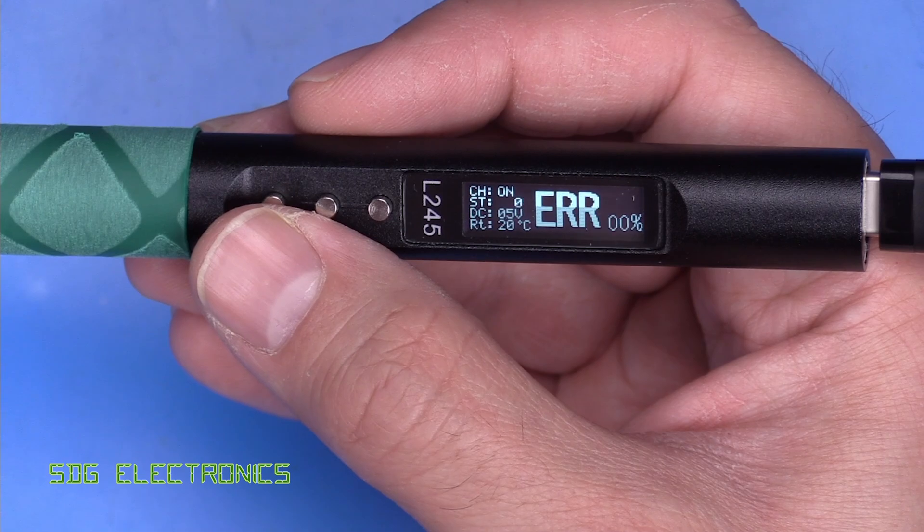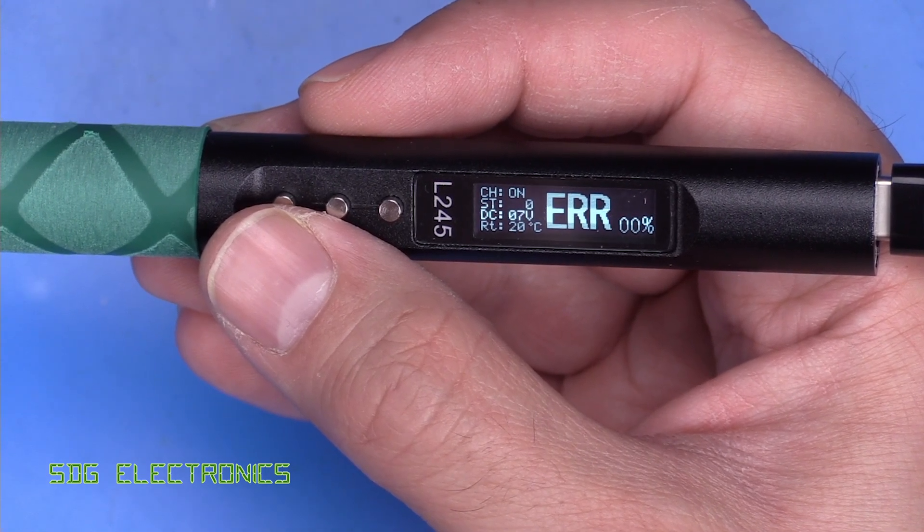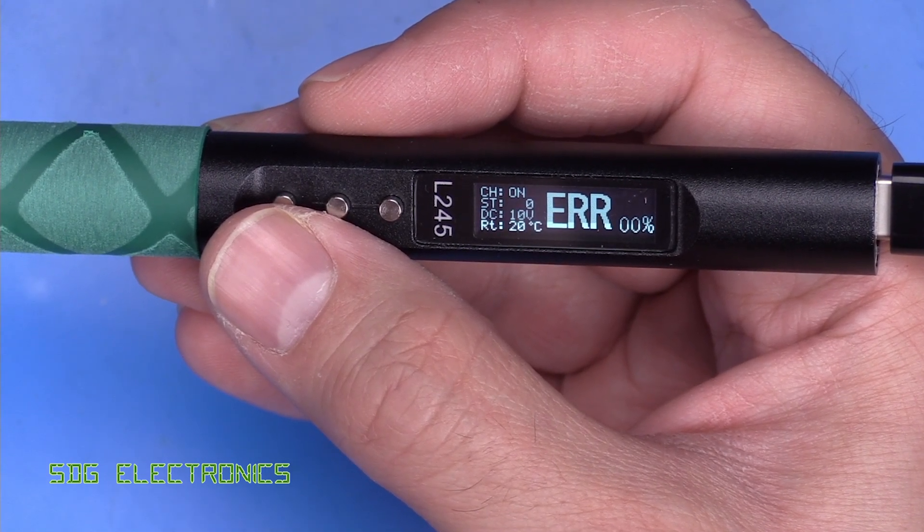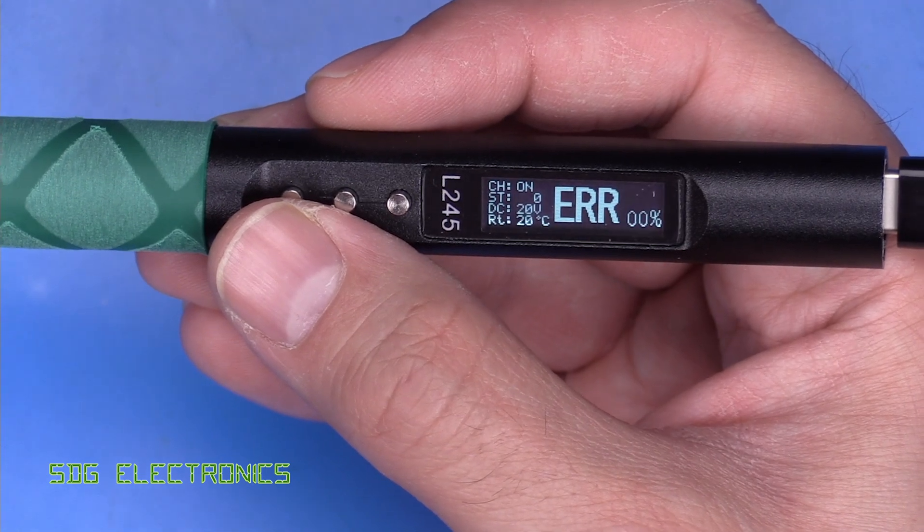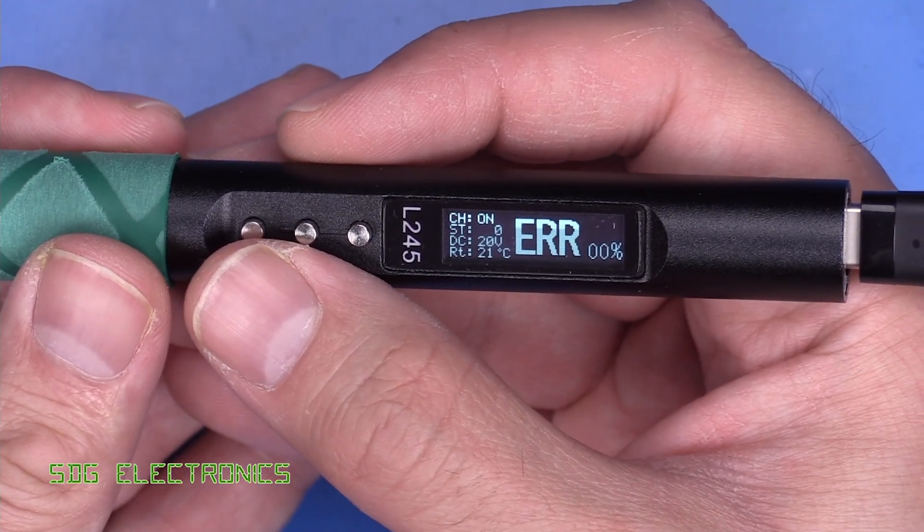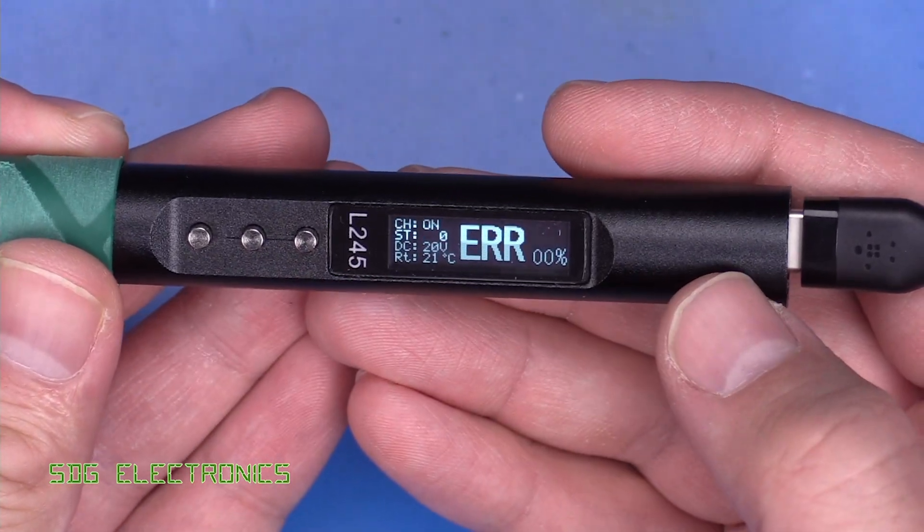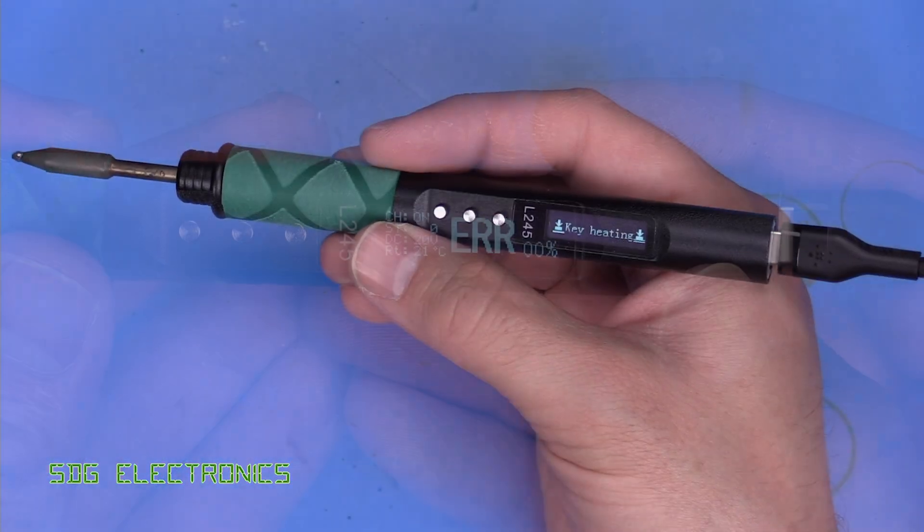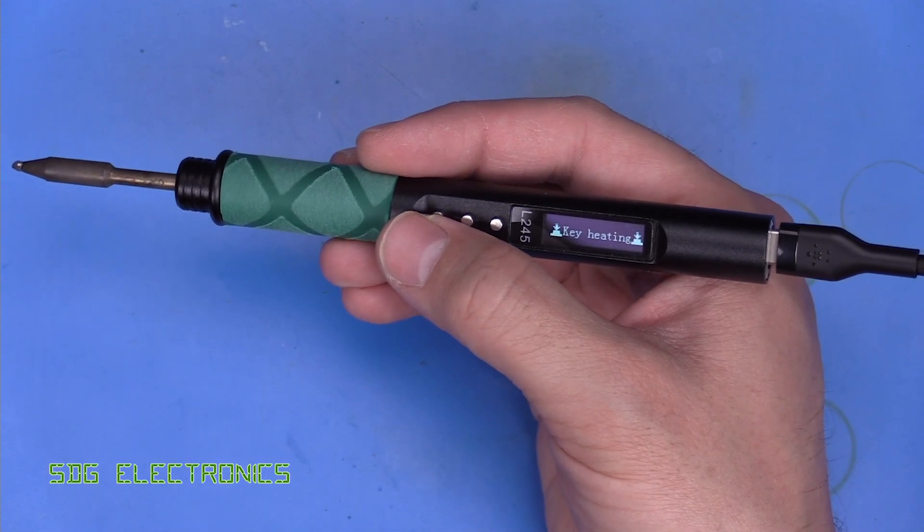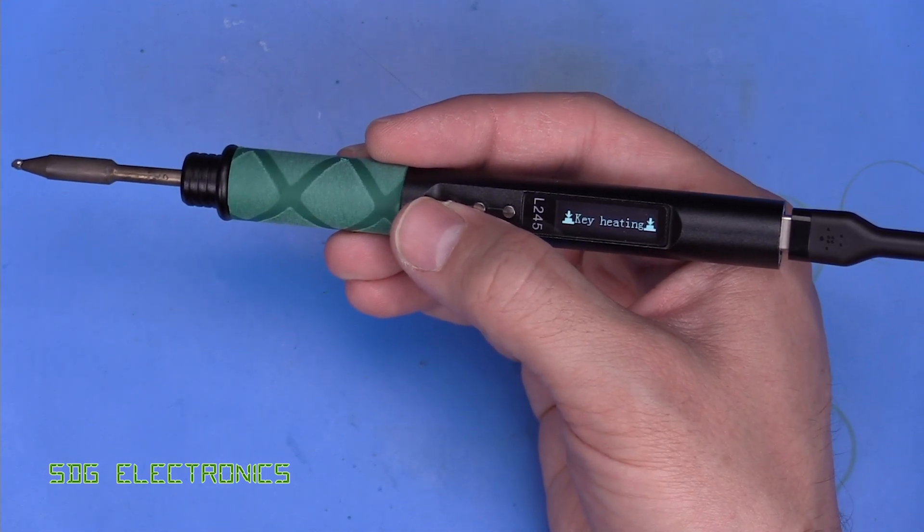And as we increase the bench power supply, we should see that reflected on the display. And there we go, we've got 20 volts going into it. So I think what we're going to do is we'll just plug in a genuine JBC cartridge and see if it can actually power it. OK, so we're powered up with a current limit of 6 amps at 20 volts, so let's see if it can heat up this cartridge.